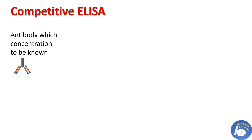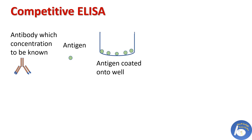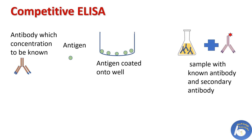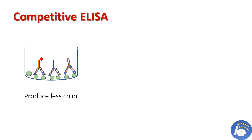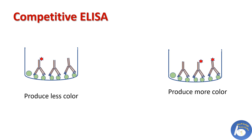Procedure: we have an antibody whose concentration has to be determined. Take an antigen specific to this antibody and coat the antigen into the well. Then take a sample containing the known antibody, add secondary antibody conjugated with an enzyme, and add this mix into the plate well. If the known antibody is more in number, it will bind to the coated antigen and produce less color. But if the secondary antibody is more in number, it will bind to the captured antigen and produce more intense color. That is how we can know the concentration of antibody in the given sample.